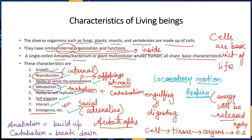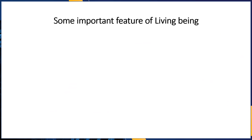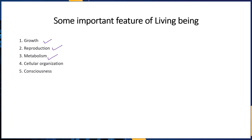Living organisms undergo growth and development, and they have a lifespan — they are not immortal. Living things move from one place to another — that is locomotory motion — and exchange of gases takes place. Examples include human beings, animals, plants, and insects. Moving to the next slide: some important features of living organisms are growth, reproduction, metabolism, cellular organization, and consciousness.